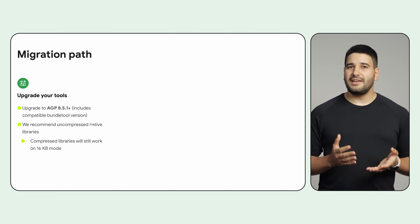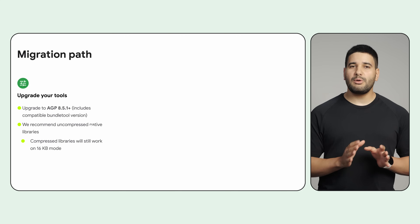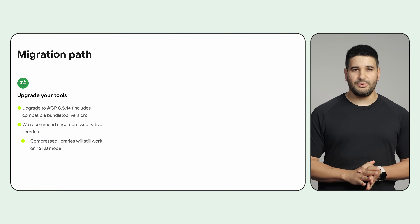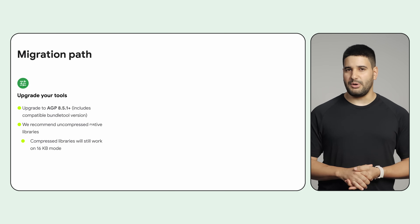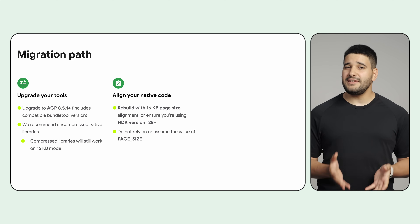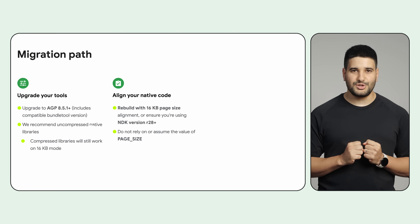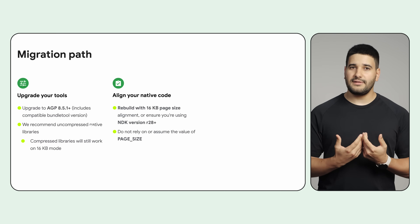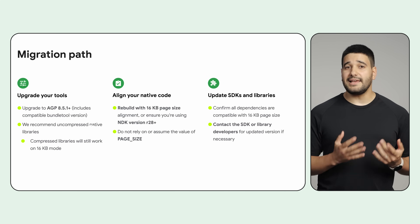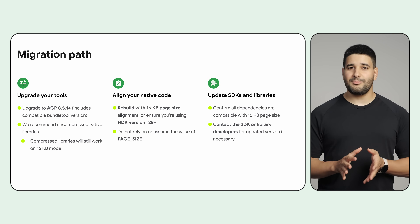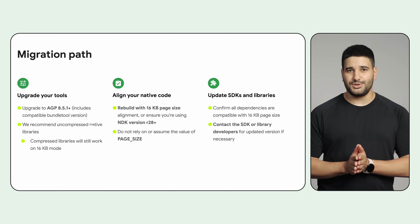Upgrade to AGP 8.5.1 or a more recent version. We recommend uncompressed native libraries, but compressed libraries will still work in 16 KB mode. If you have any native code included in your app, rebuild it with NDK version R28 or above, and don't assume the page size in your codebase. Lastly, make sure your app's dependencies are also compatible, and if not, contact their developers for an updated version.